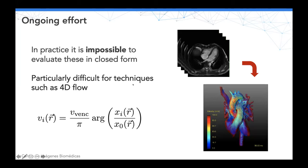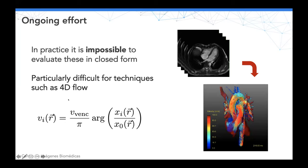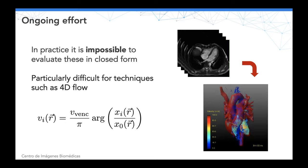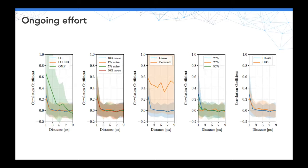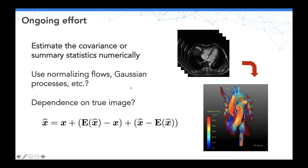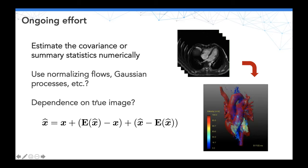In practice, it's impossible to evaluate this in closed form, especially when doing something additional on top of computing images. For example, 4D flow MRI acquires four complex images and estimates a velocity field — allowing resolution of the cardiac flow velocity field during a cardiac cycle. In that case, you have random patterns on the image and apply a nonlinear transform, making analysis much harder. We need to leverage computational techniques to estimate the covariance or summary statistics numerically, or fit the random noise distribution using normalizing flows or Gaussian process regression.